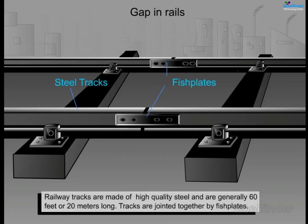Point number five: why glassware used in the kitchen are made up of thin glass. Railway tracks are made of high quality steel and are generally 60 feet or 20 meters long. Tracks are joined together by fish plates.